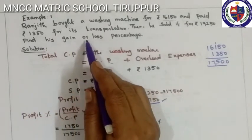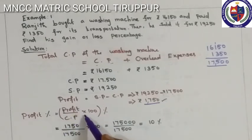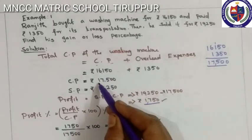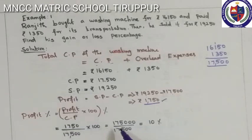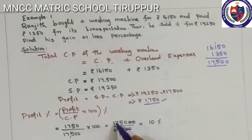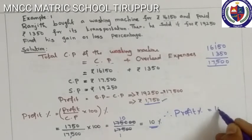Find the gain percentage. Profit Percentage equals Profit divided by CP into 100. Profit value is 1,750, Cost Price is 17,500. So 1,750 divided by 17,500 into 100. Cancelling, 1,750 goes 10 times into 17,500. Therefore, Profit Percentage equals 10%.